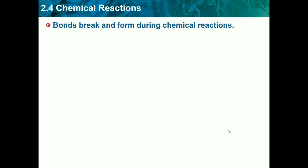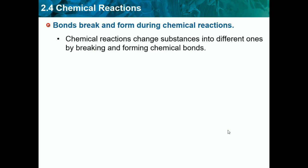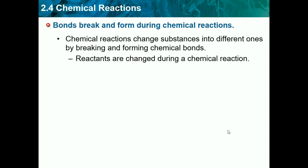Bonds break and form during chemical reactions. Chemical reactions change a substance into different ones by breaking and forming chemical bonds. Reactants are what you start with and they are changed during the chemical reaction, and products are made by chemical reactions. So reactants are what you start with, products are what you end with.